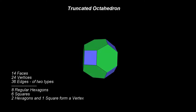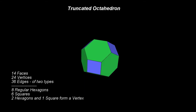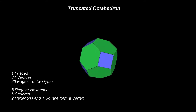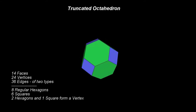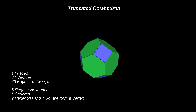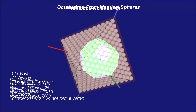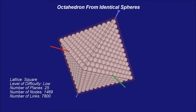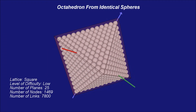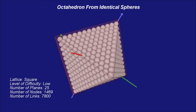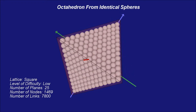The process of generating a truncated tetrahedron from a tetrahedron can also be used to generate a truncated octahedron. Of course, we have to start from an octahedron this time.